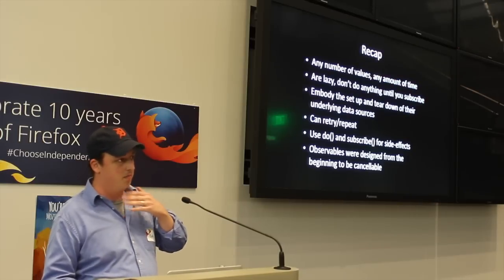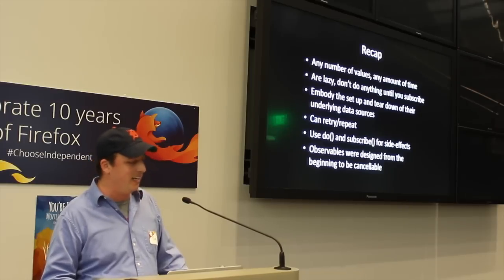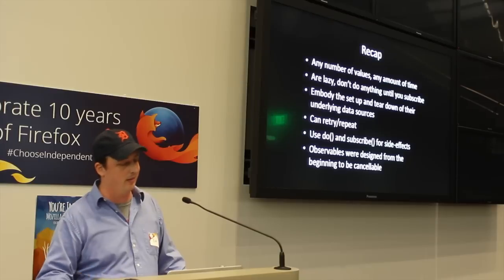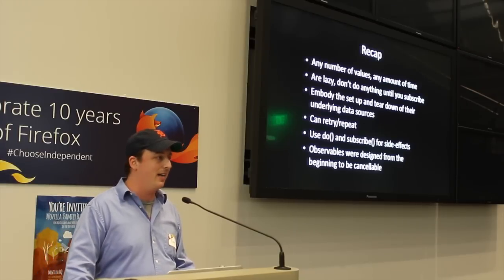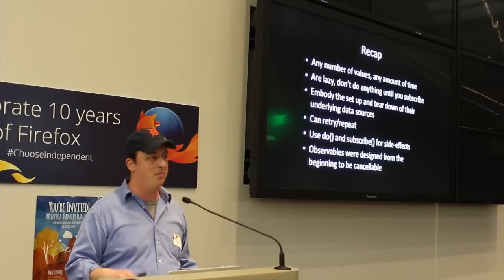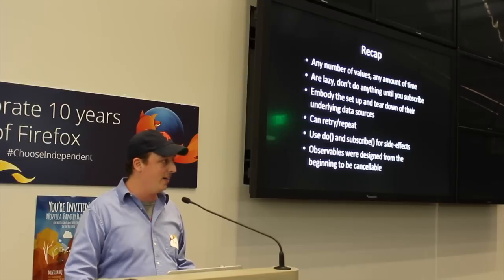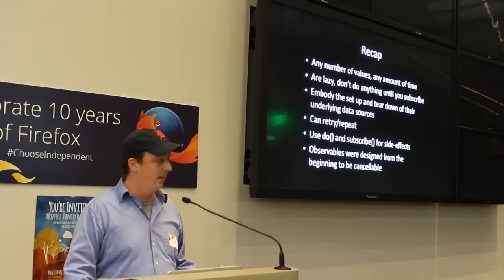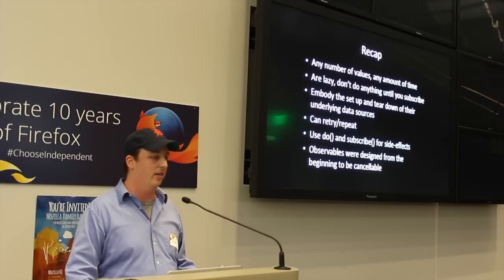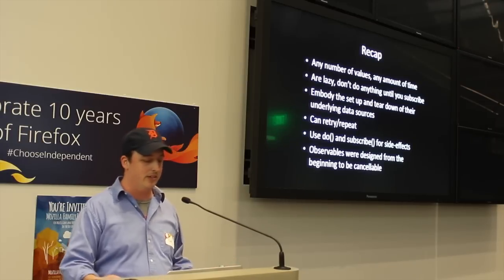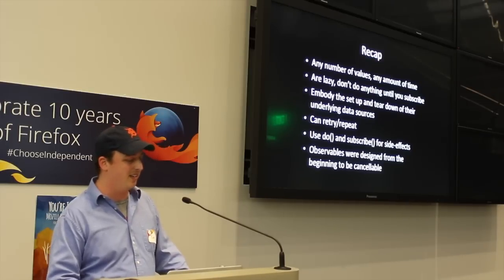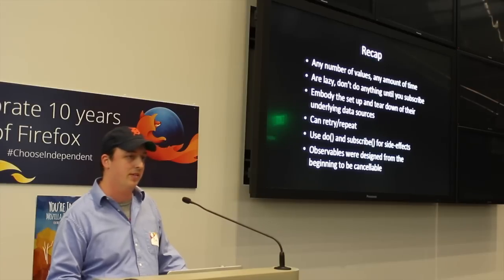A recap on observables: Observables are any number of values over any amount of time. They're lazy, so they don't do anything until you subscribe to them, unless they're hot — again, a different topic. They embody the set up and tear down of your underlying data source. So anything you can start or stop, you can represent with an observable. They can be retried or repeated. You want to try to use do and subscribe to create side effects. And observables are by design cancelable — which is a little dig because there's a lot of work going on right now trying to make promises cancelable, and it doesn't pan out quite as smoothly as it does with observables because they were designed that way.